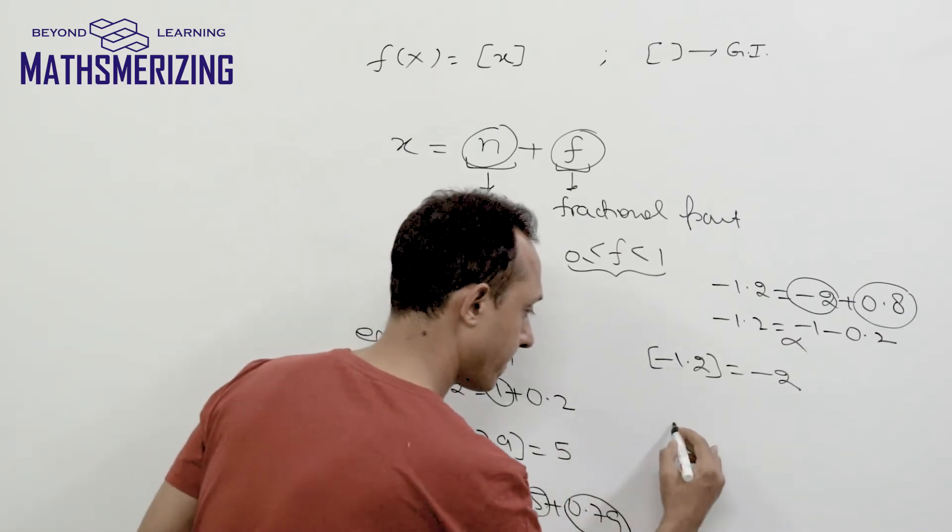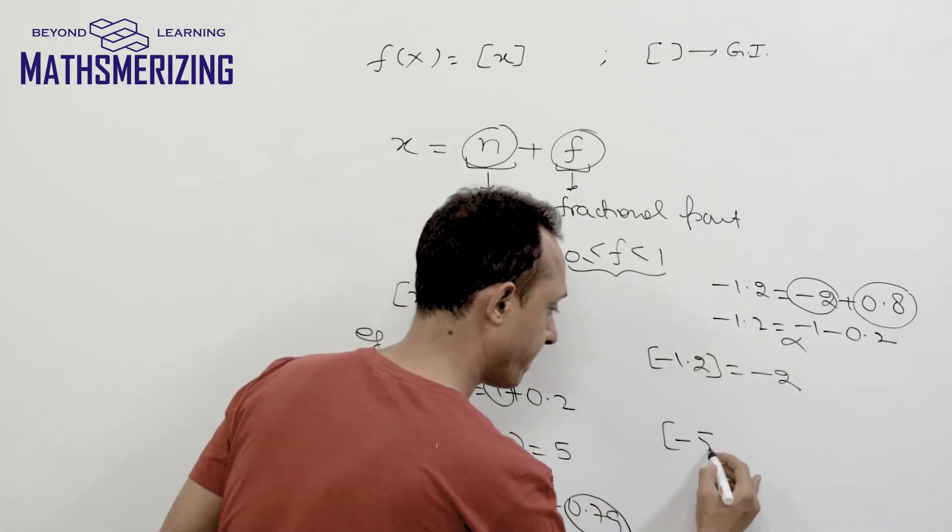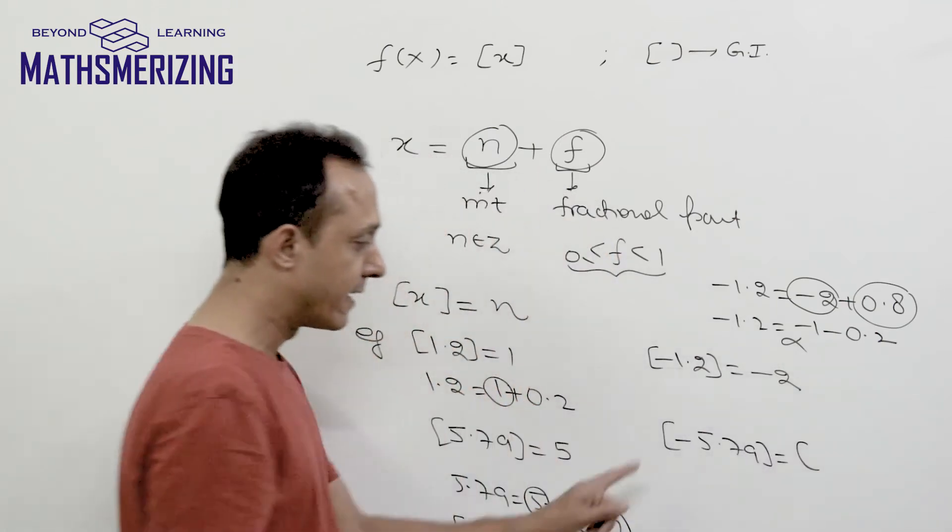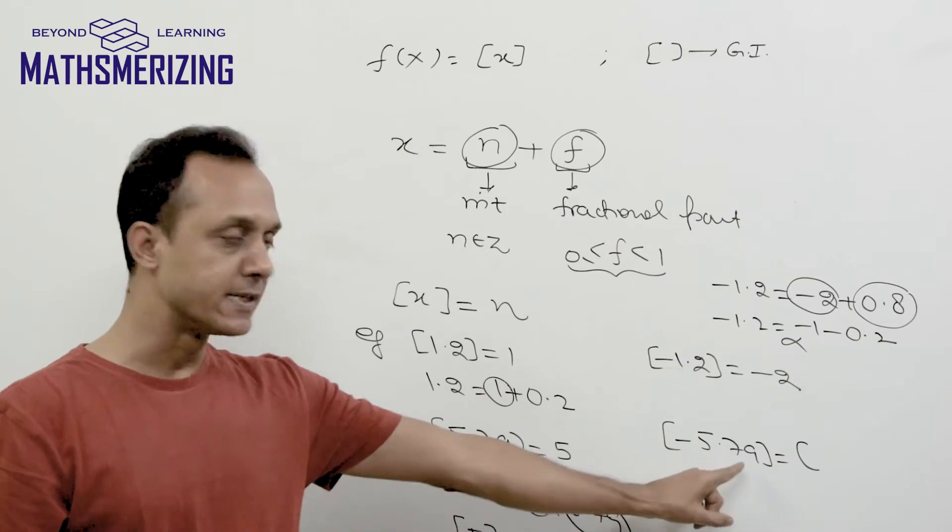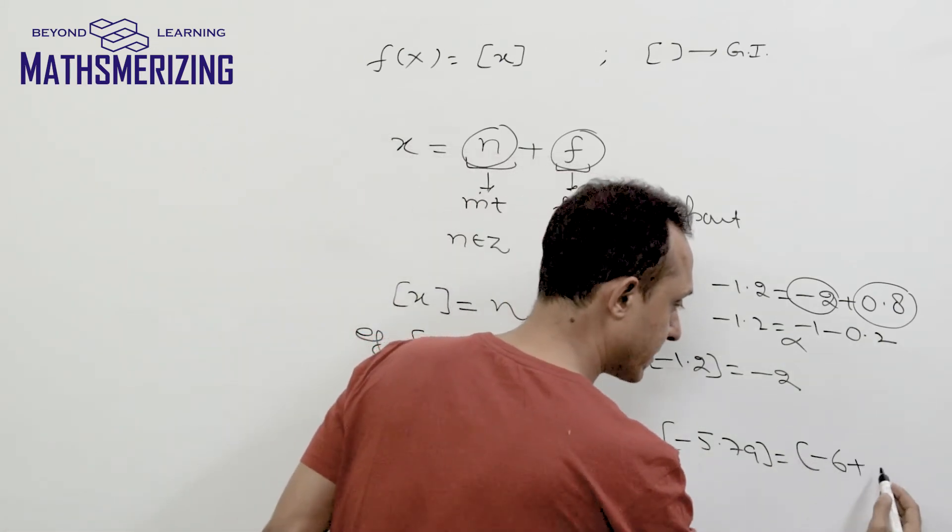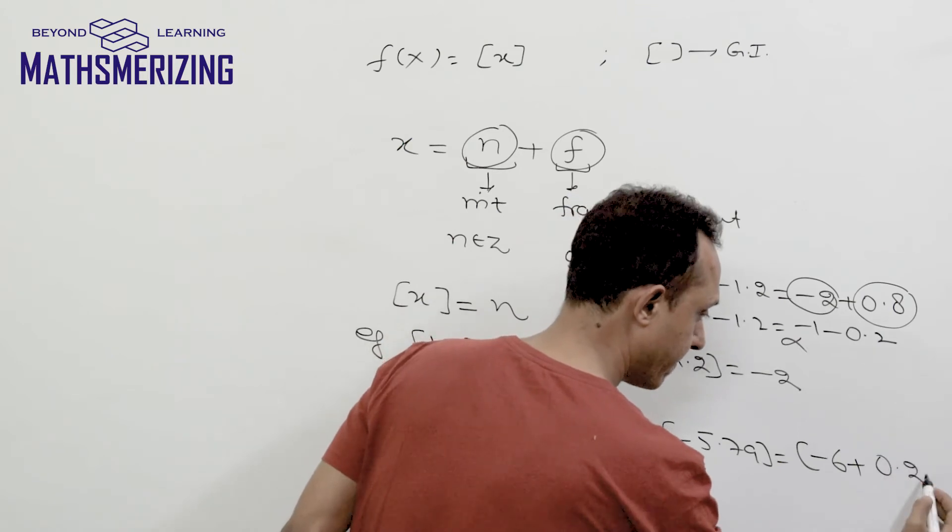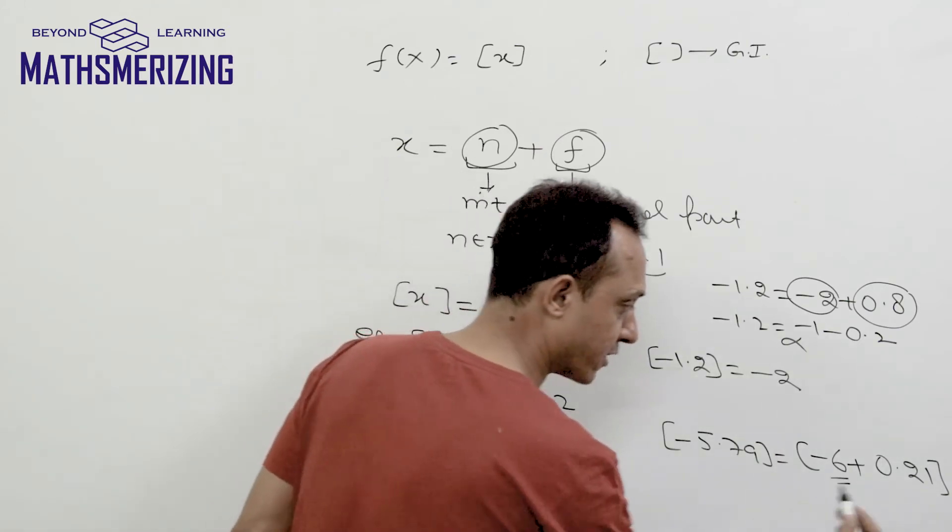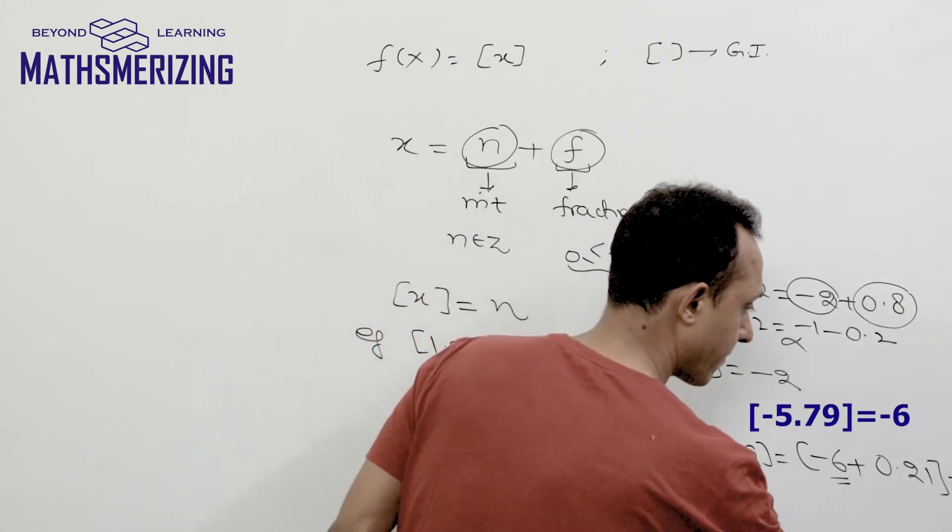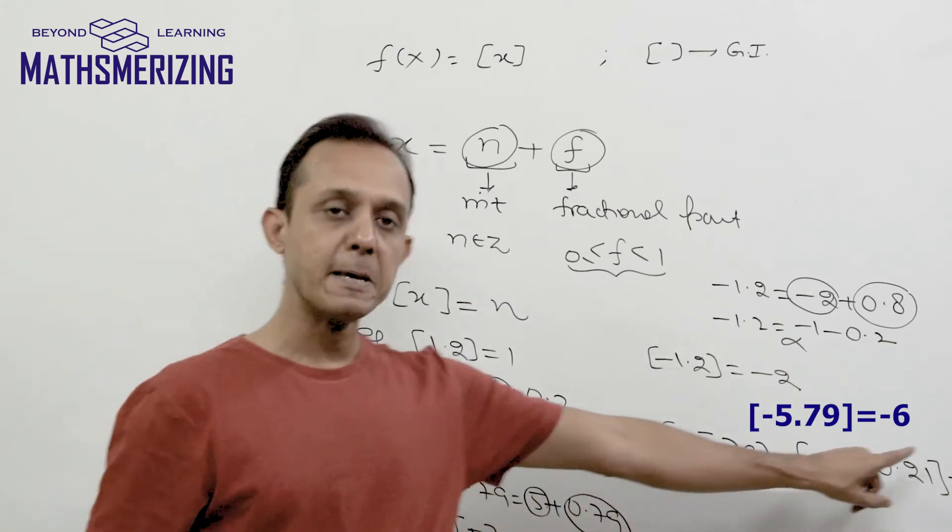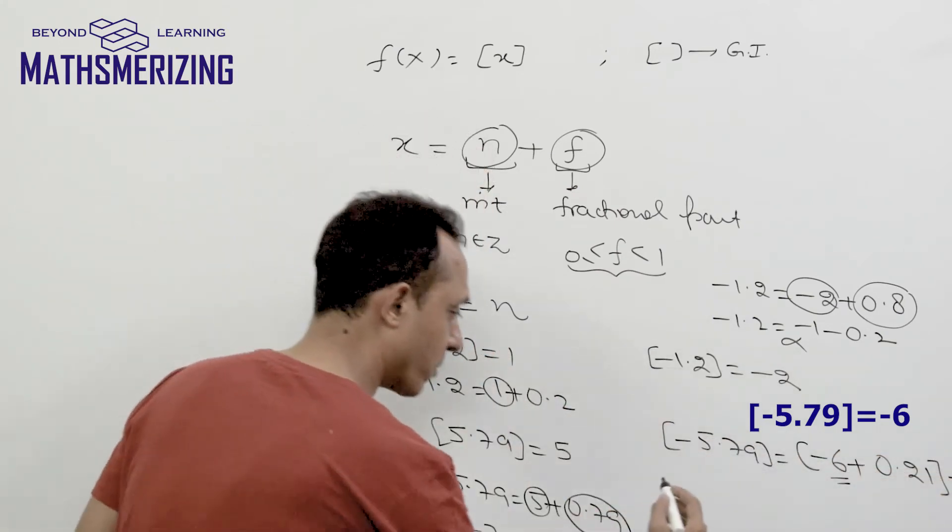What about greatest integer function of -5.79? Rather than writing it as -5 minus 0.79, I'll write it as -6 plus 0.21. So in this case, its greatest integer function will be -6. The greatest integer value of -5.79 is -6.